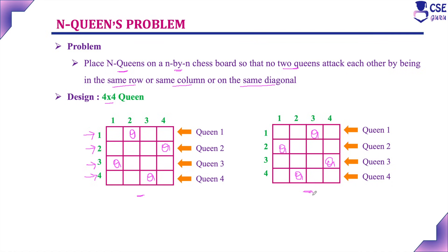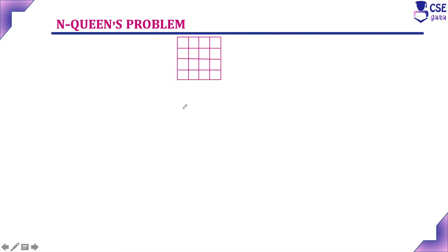Now, we are going to implement the N-Queens problem using the backtracking technique by constructing a state space tree. We will try to proceed to the next level component to find a feasible solution. Whenever we reach a dead end — meaning we cannot proceed to construct the next level component — we backtrack to the previous step and try the other possibilities. That is the backtracking technique.